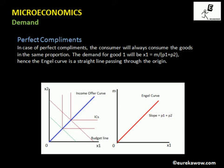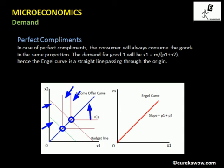On the left panel you can see the income offer curve for perfect complements. The indifference curves are L-shaped. The bundles chosen by the consumer are joined to obtain the income offer curve. The Engel curve for perfect complements is upward sloping because as income increases, the quantity demanded of good one also increases. Notably, the Engel curves for both perfect substitutes and perfect complements pass through the origin, as do their income expansion paths.